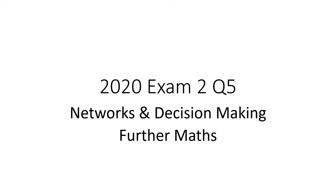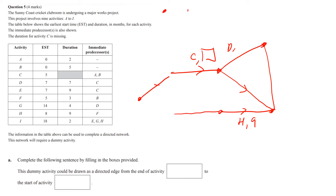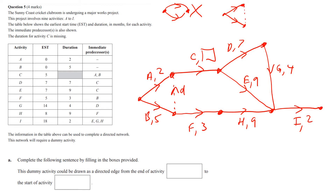2020 exam 2, question 5: Networks and Decision Making. They haven't given you the network to draw — you've got to draw it yourself. The important thing is this situation is not allowed, so you might have to insert a dummy. This is what they're talking about in part a — where does that dummy activity go? You could have one come up like this, one come down like this, and then insert a dummy, which could go either way.